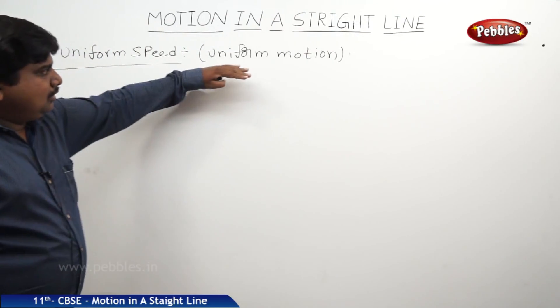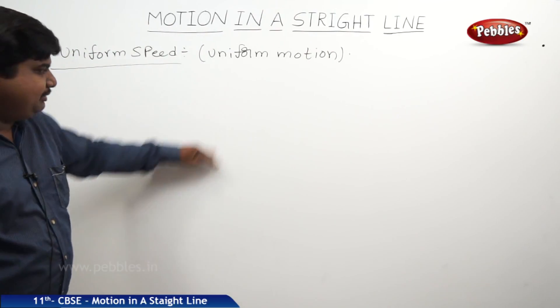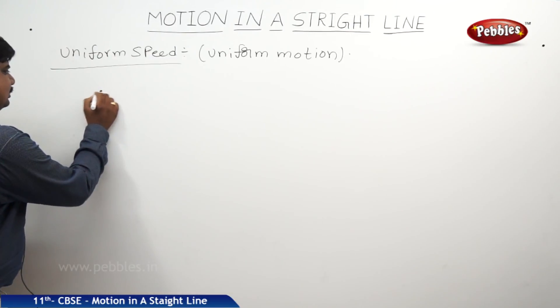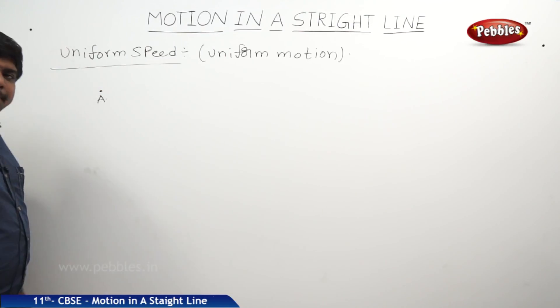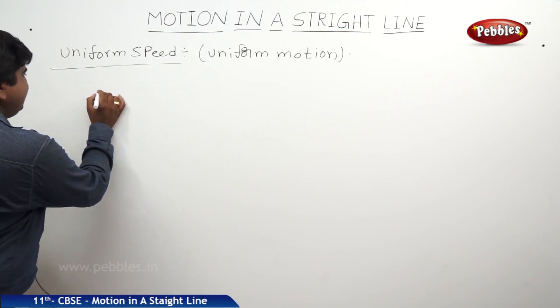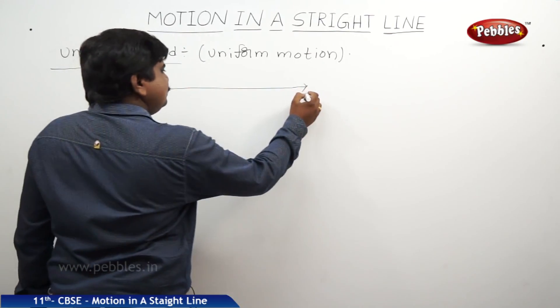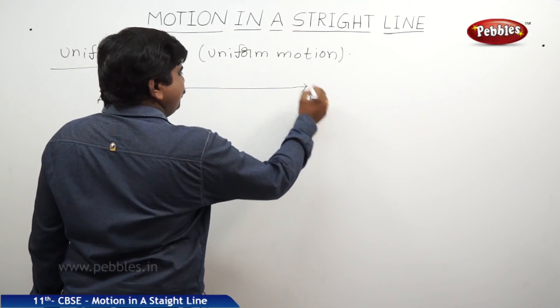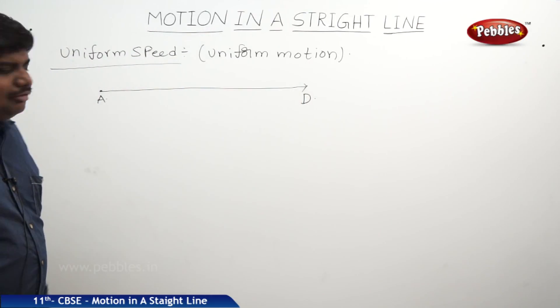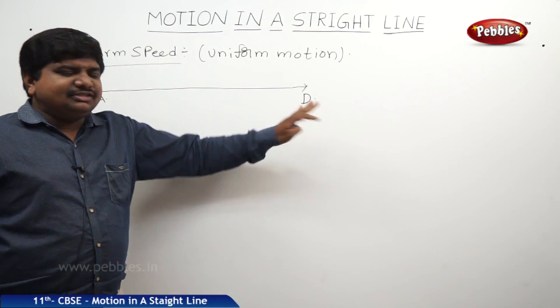Yes, uniform motion means, let us take a body which is at a position A. If this body is moving in a straight path, so it has reached a destination point called D, where A is initial position, D is final position.